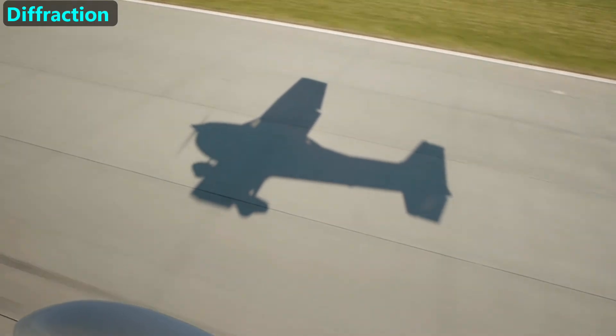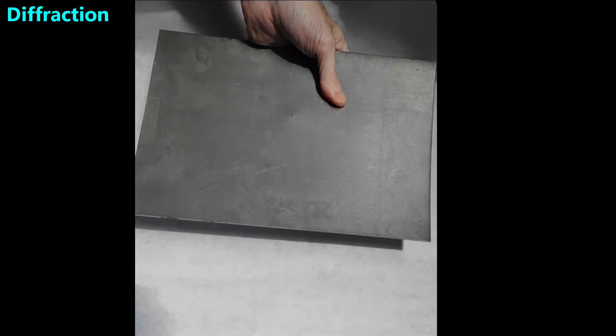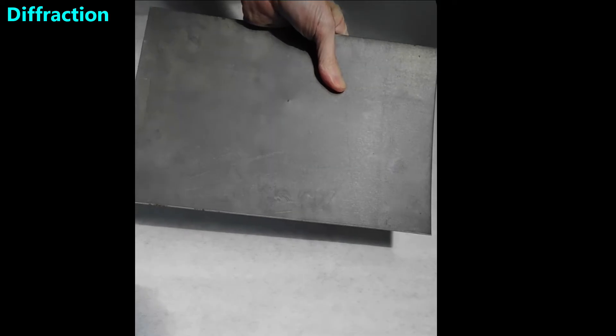Next, we'll introduce diffraction. This is a piece of sheet metal. When we hold the metal close to the paper, the shadow has a sharp line. But when we move the sheet metal farther from the paper, the line starts to become fuzzy. That's because light waves bend at a slight angle as they go past an object in a process called diffraction.